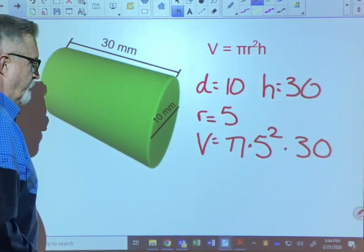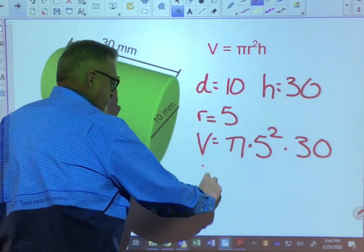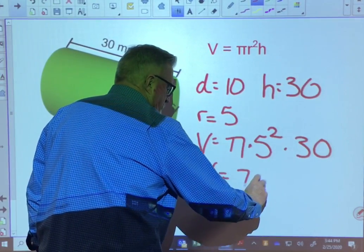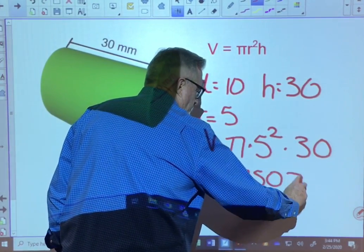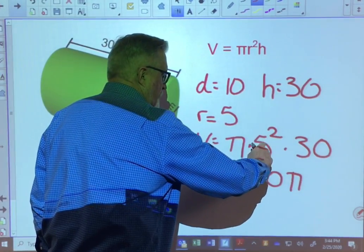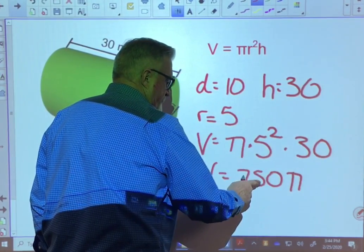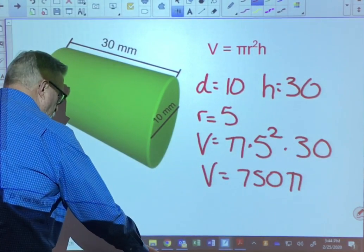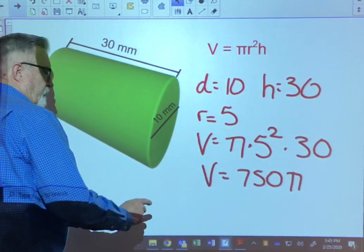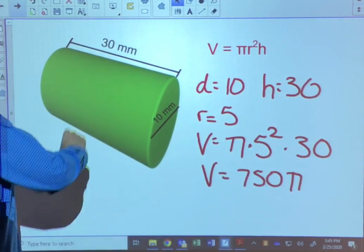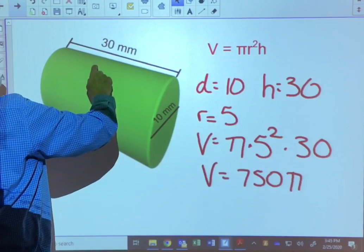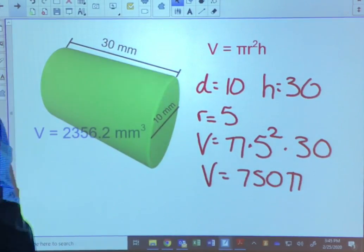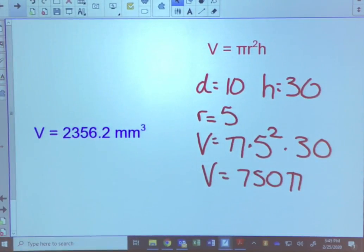So when I multiply that, when you first do it on your calculator, it's going to give you an answer of 750 pi, because 5 squared is 25 and 25 times 30 is 750. So it's 750 pi. When we go ahead and convert that using our conversion key, you're going to find that it gives us a volume of 2,356.2 millimeters cubed.